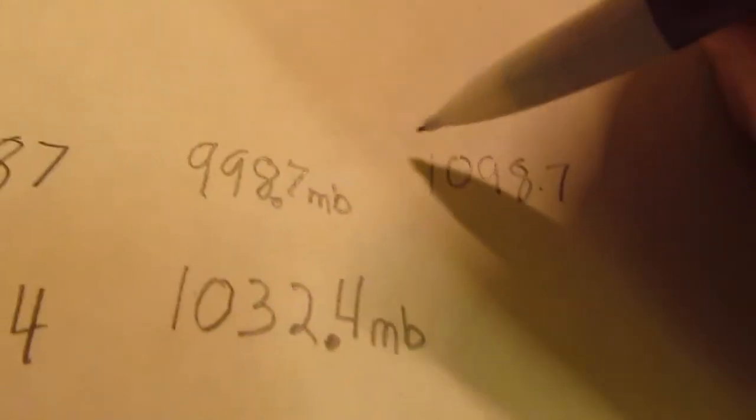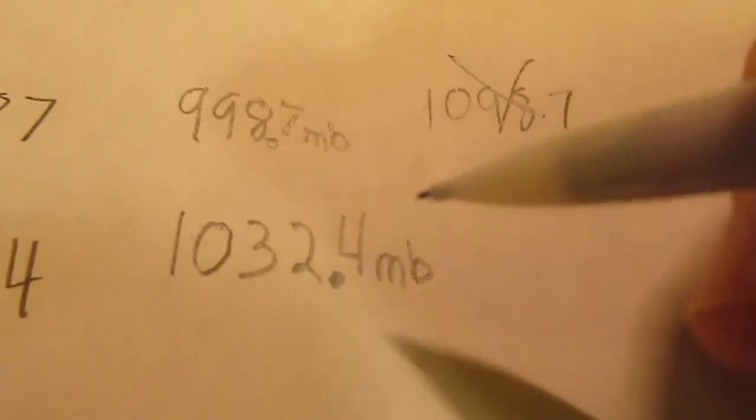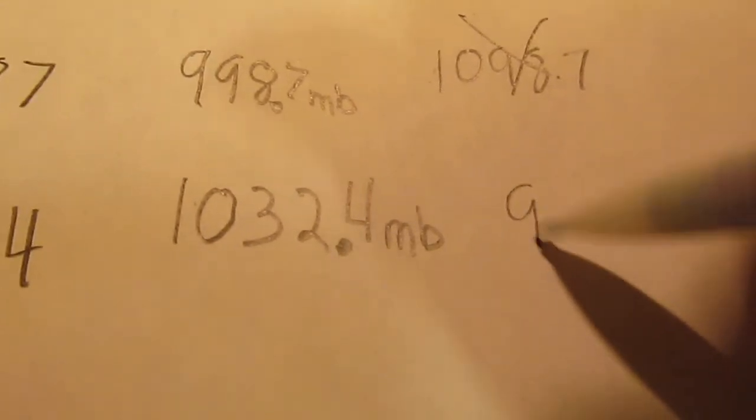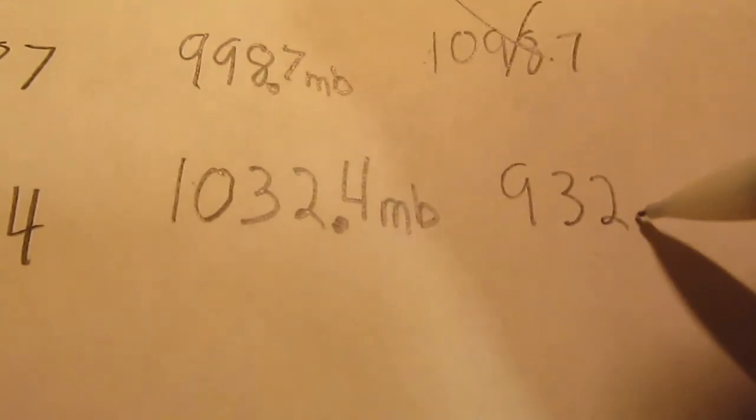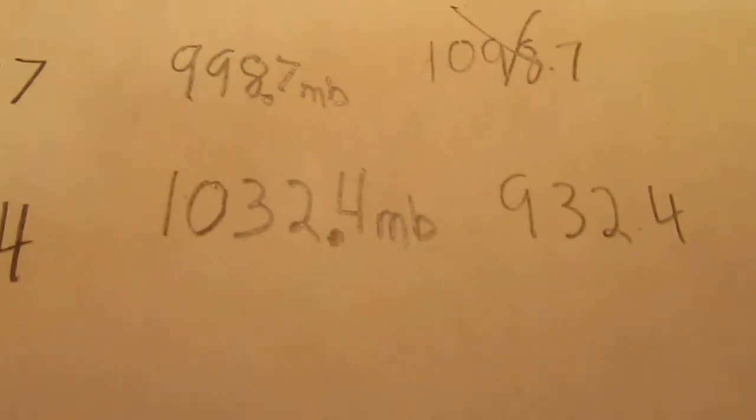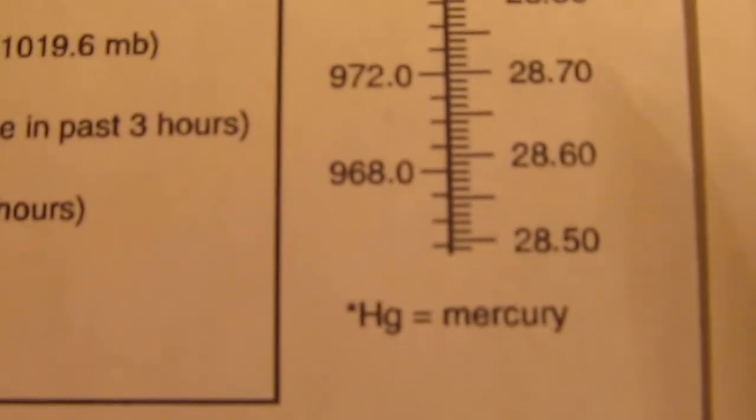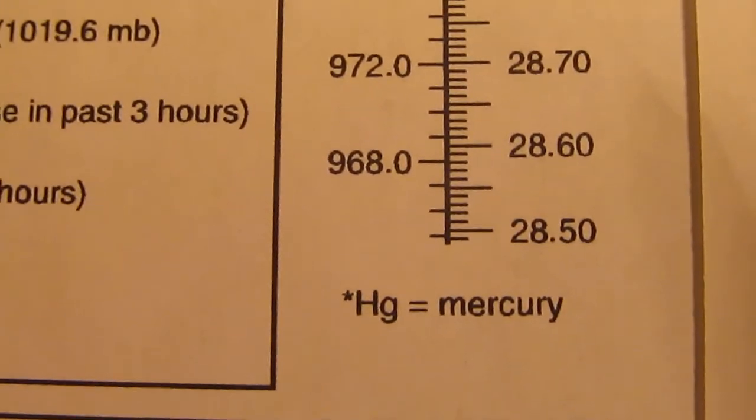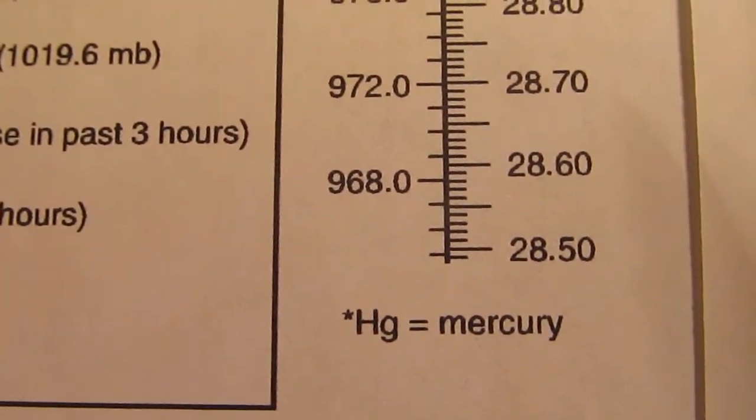So we know that this is no good. And what if down here we wrote 932.4? Well, we could see here that 932 would go off the bottom of the scale. It only goes down to 980.